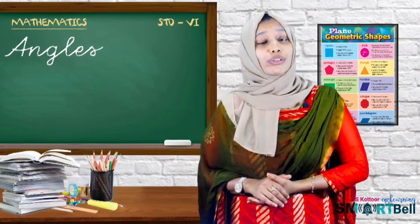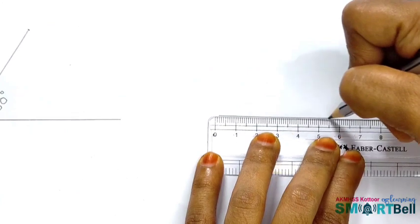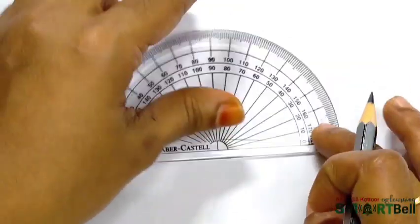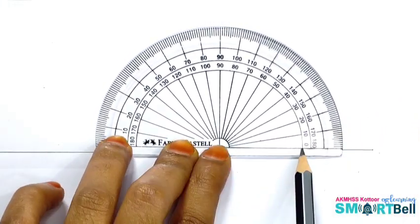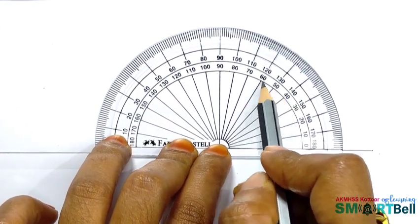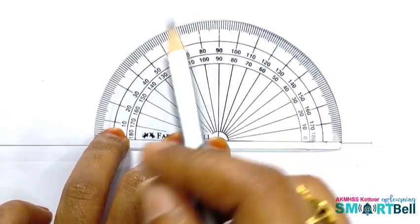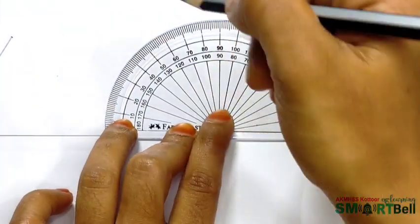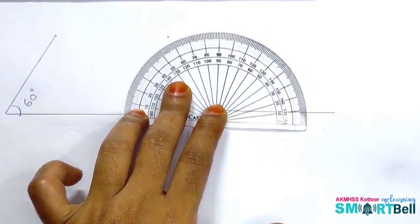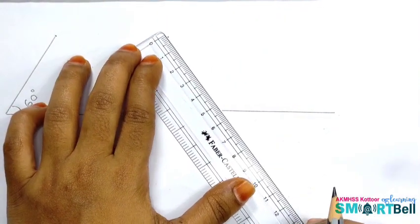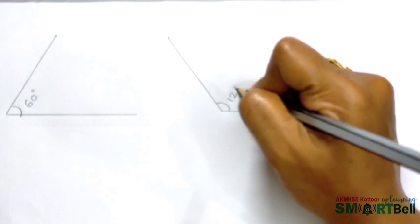In the same way, let's check how to draw an angle of 125 degrees. First step, make a line with a scale. After that, place the center point of the protractor here. Simply focus on zero: 10, 20, 30, 40, 100, 110, 120, and 130. What is 125? Good. It is between 120 and 130. So, we make a point here and join the endpoint and the marked point. So, it is the angle of 125 degrees.